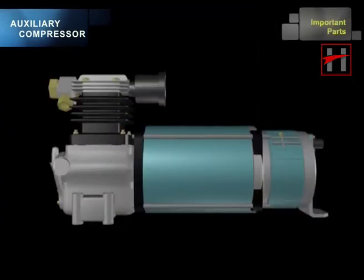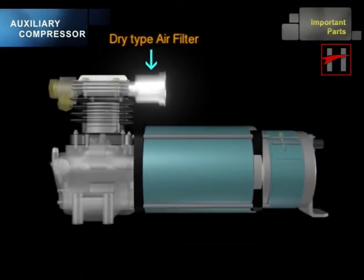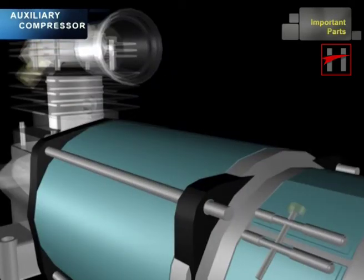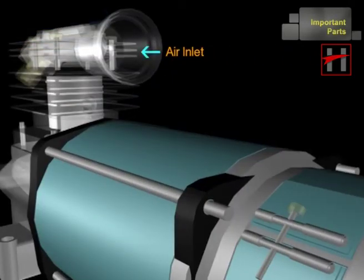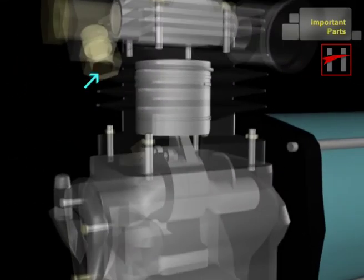The important parts of the auxiliary compressor are DC motor, dry type air filter, air inlet, and air outlet.